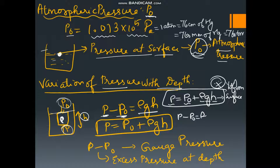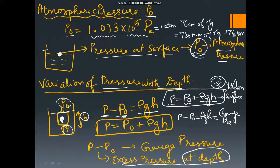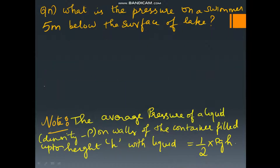P minus P0 is equal to ρgh, which is the gauge pressure — nothing but the excess pressure at depth. If they ask you to calculate the excess pressure at depth, calculate P − P0 = ρgh, which is the gauge pressure.